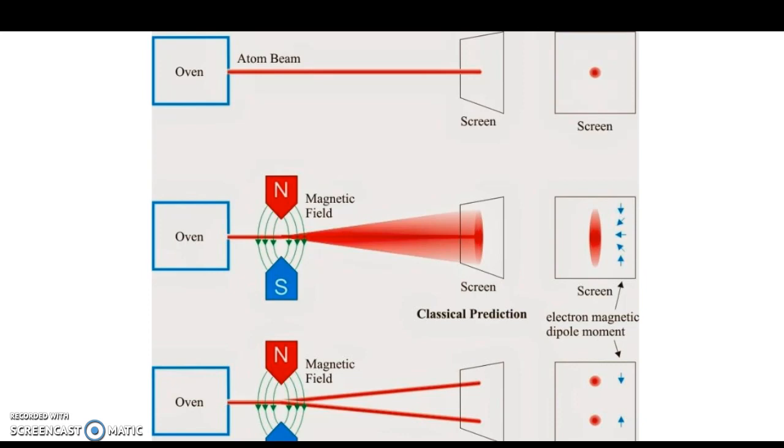Instead, the beam was observed to split into two sharp beams, as shown in the bottom diagram, implying that the electrons are restricted to only two distinct orientations, along or opposite to the magnetic field, which, for convenience, we call spin up and spin down.